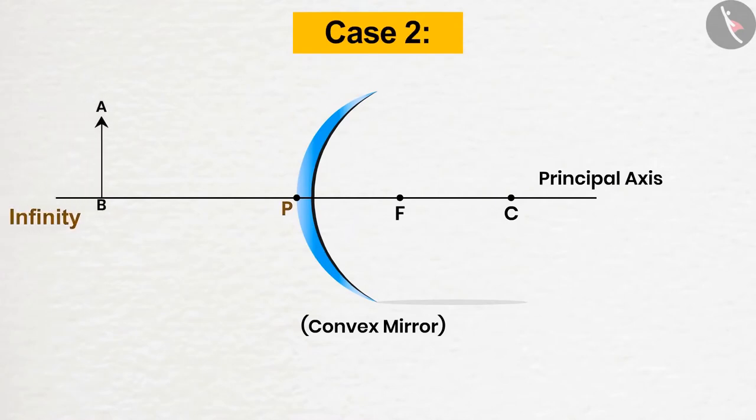Case 2. In the second case, the position of the object will be in between the infinity and the pole. In this case as well, the rays of light will be diverged after reflection. But from the rule of 2 plus 4, the image appears to be formed behind the mirror between the pole and the focus. Here too, the image is smaller in size than the object and virtual and erect in nature.